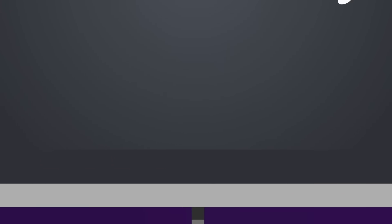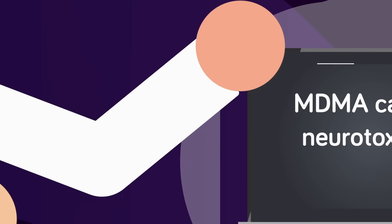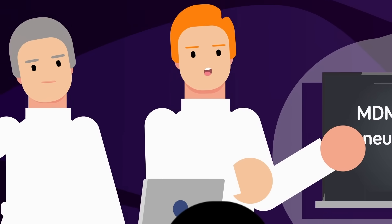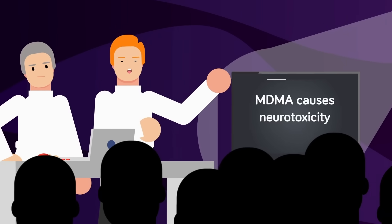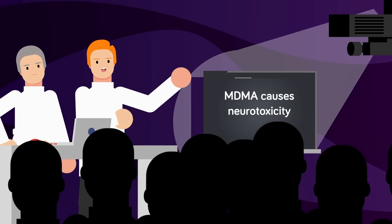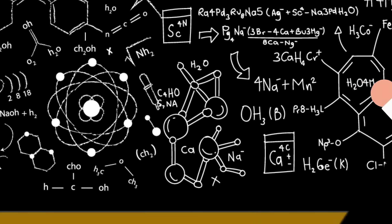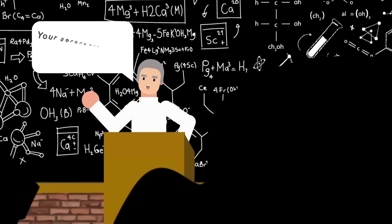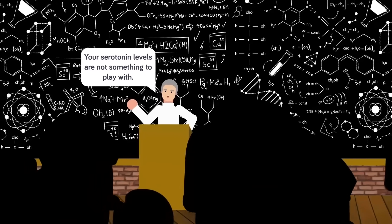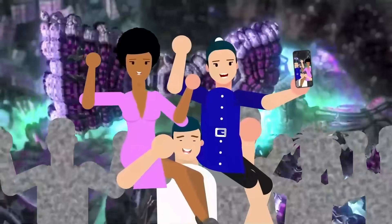One of the most concerning aspects Alex learns about is the potential for MDMA to cause neurotoxicity, a term he remembers from his neuroscience class. Neurotoxicity refers to the damage that certain substances can cause to the nervous system, and in the case of MDMA, this can lead to a reduction in serotonin transporters in the brain. Studies show that this reduction can have significant implications for mood regulation, cognitive function, and overall mental health. Alex begins to understand that while the immediate effects of MDMA may be appealing, they come with a hidden cost that might not be immediately apparent.